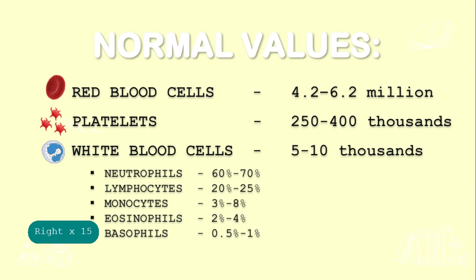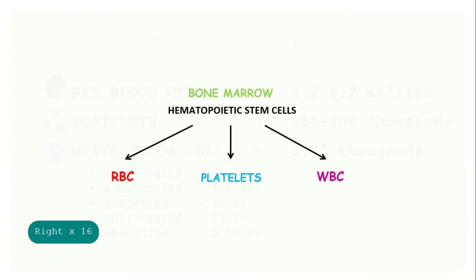and eosinophils. The normal values for red blood cells is 4.2 to 6.2 million, for platelets 250 to 400,000, while the white blood cells is 5 to 10,000.